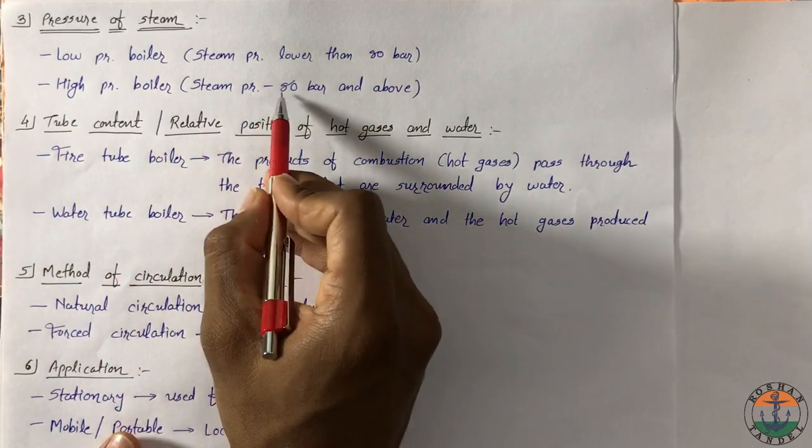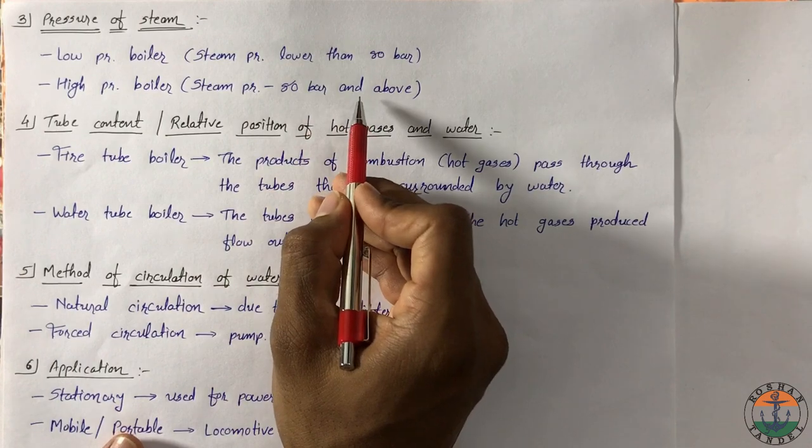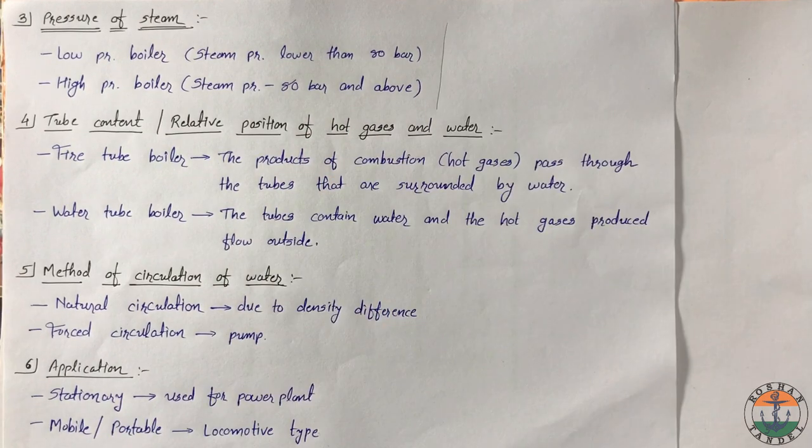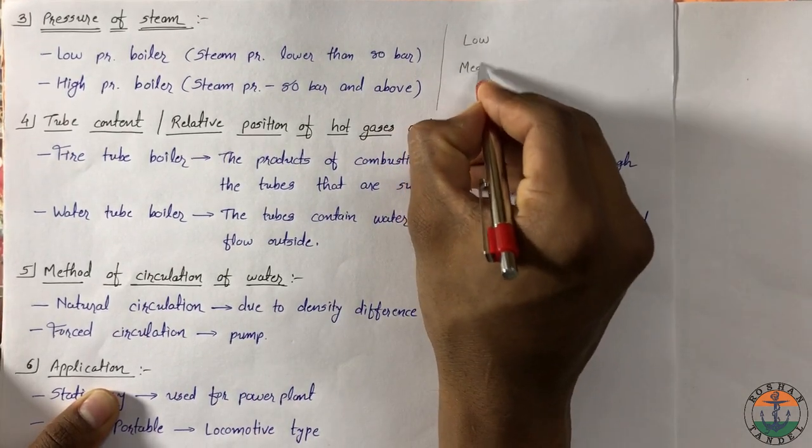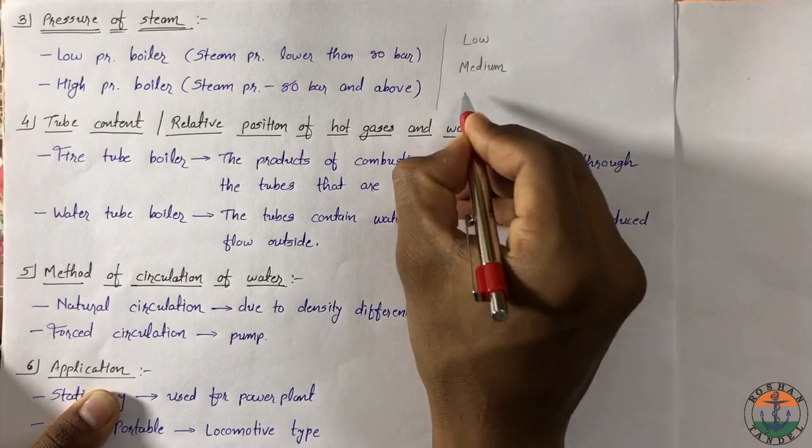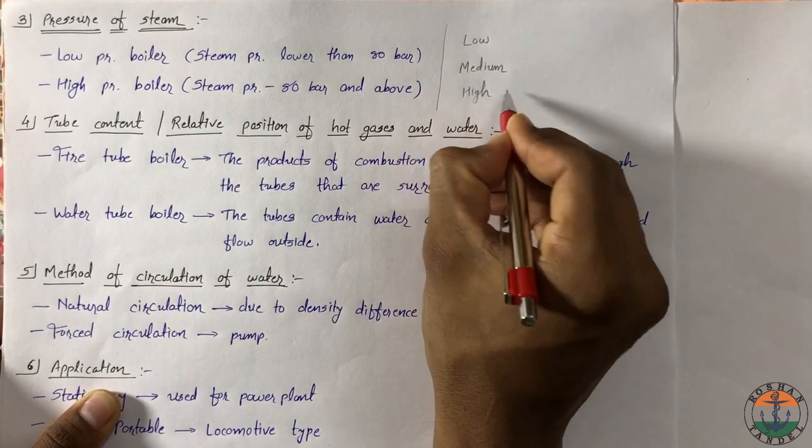In high pressure boilers, steam pressure is 80 bar or more than 80 bar. Sometimes boilers are classified as low pressure boilers, medium pressure boilers and high pressure boilers.